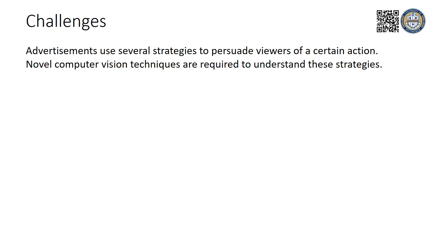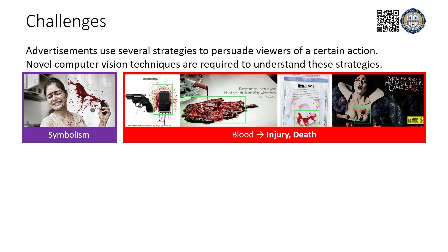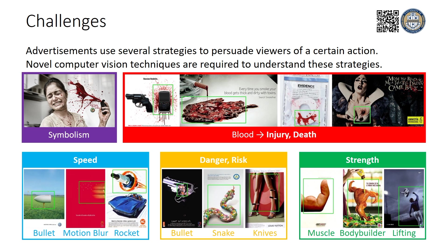In fact, advertisements use diverse strategies to convey a message, and we have identified several of these which correspond to insufficiencies of current vision systems. For example, ads might employ symbolism, where objects or regions in an image — like blood — refer to abstract concepts outside of the image, like injury or death. Other symbols might be speed, danger, or strength. Associations between objects and abstract concepts can be quite arbitrary, and the same concept can be illustrated with diverse visuals, thus posing a learning challenge.